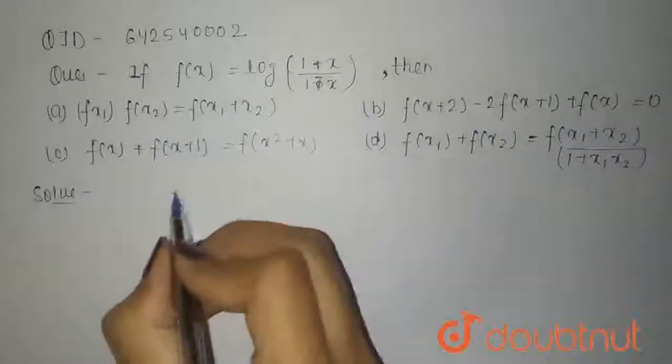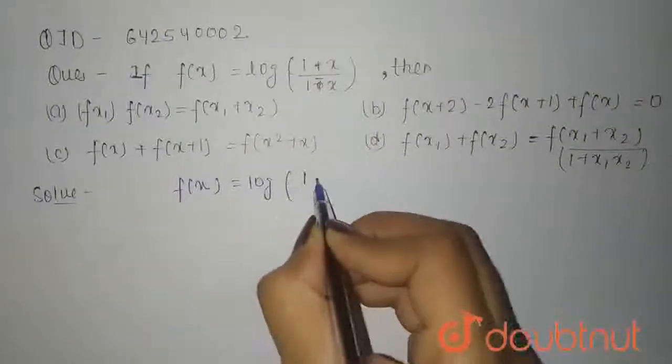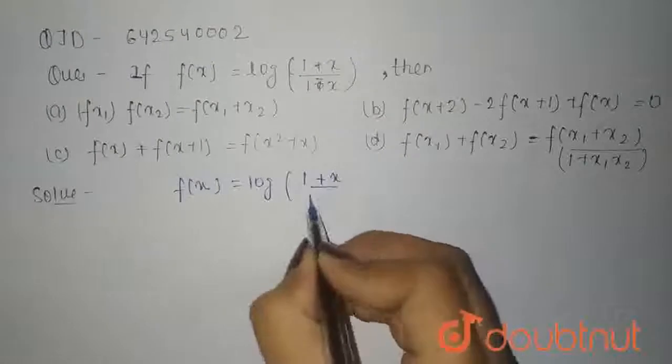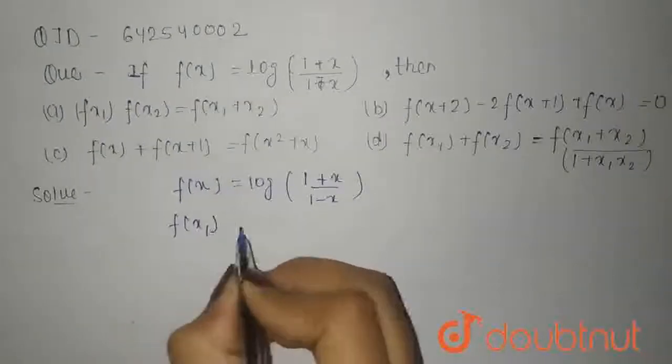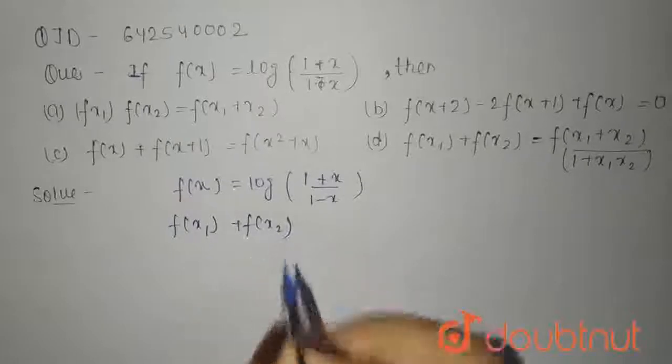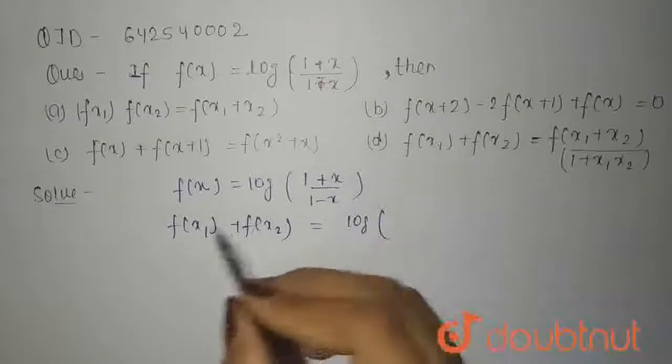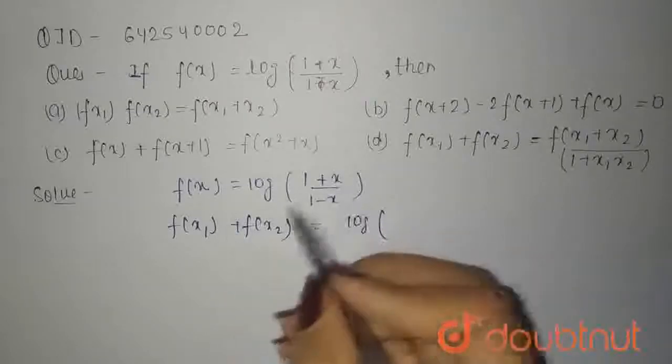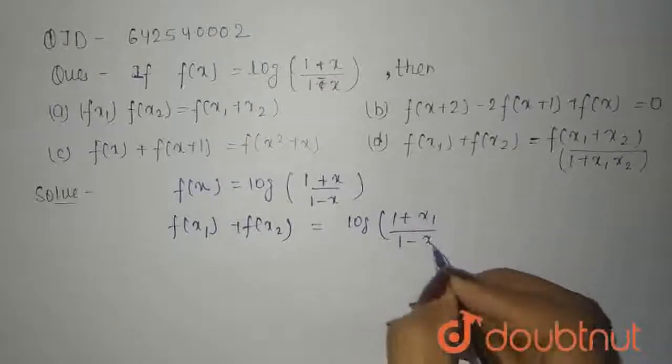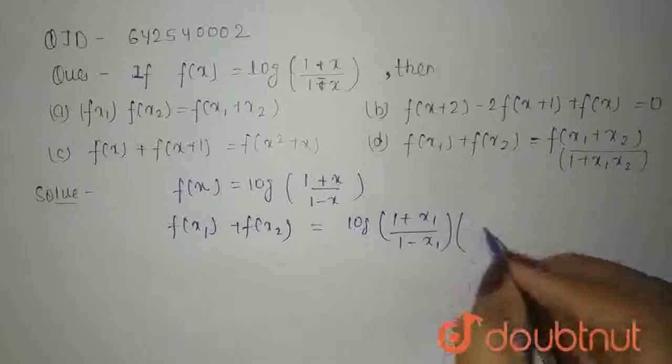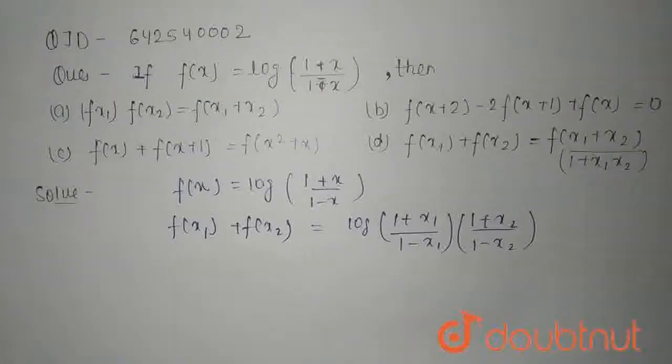So, let's solve it. f of x is equal to log of 1 plus x upon 1 minus x. So, f of x1 plus f of x2 is equal to log of putting x1 in the place of x and x2 in the place of x. You will get 1 plus x1 upon 1 minus x1 into 1 plus x2 upon 1 minus x2.